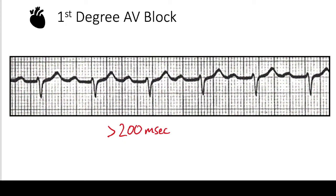Looking at this rhythm strip, starting with the third beat — because it's good to start on a big box when counting — we see the PR interval spans one full big box plus almost half another, giving us at least 200 plus 100 milliseconds, totaling around 300 milliseconds, which is well above the 200 millisecond threshold for first degree AV block.